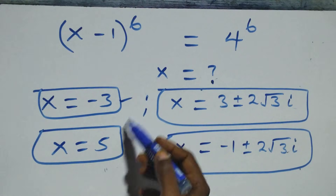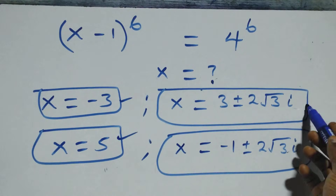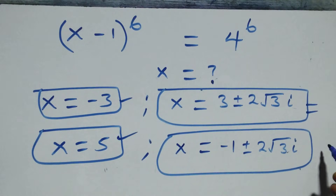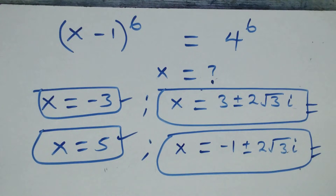Therefore, all together we have 6 solutions in this problem: 2 real solutions (x = -3 and x = 5), 2 complex solutions from Case 1, and 2 complex solutions from Case 2. Thank you for watching — don't forget to subscribe for more videos, turn on the notification bell, share this video, and put your comments. See you in the next class, bye for now.